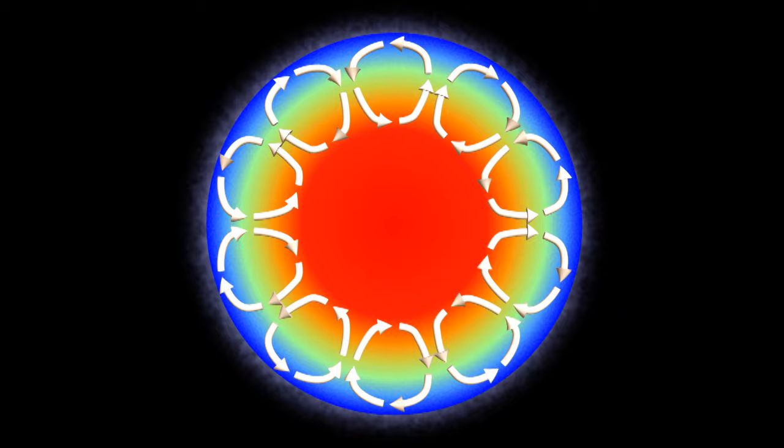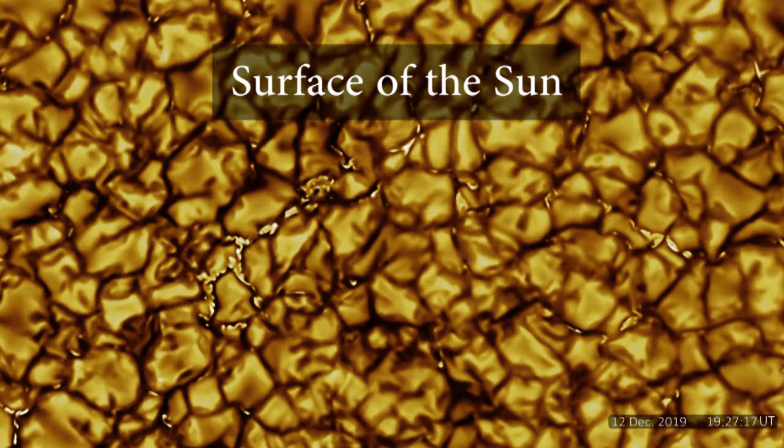Convection happens around the outside of the sun, not in the middle. And we can see convection on the outside. The sun is bubbling like a pot of water.